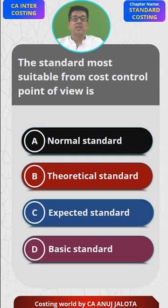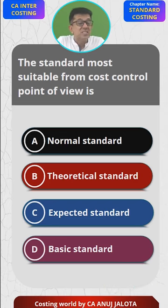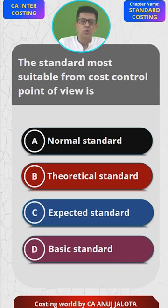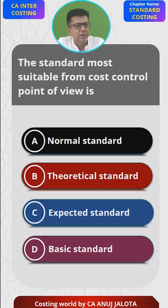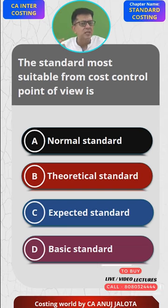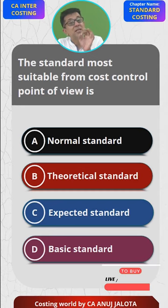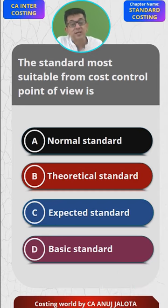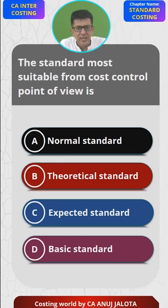Now, the question was about the standard most suitable from a control point of view. Control means ensuring the cost is not high. Suppose the price of raw materials was supposed to be ₹5 per kg, but your purchase manager is talented and can negotiate with suppliers to bring the price down from ₹5 to ₹4.5. This ₹4.5 would be the expected standard — it helps him perform and helps you control your cost.